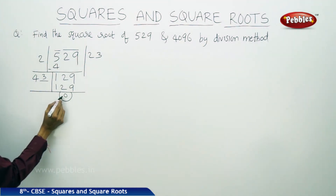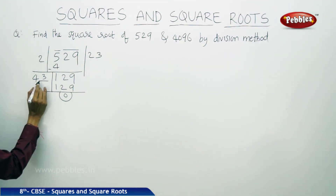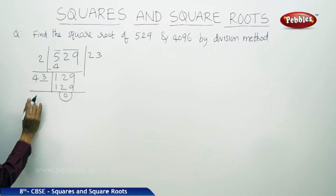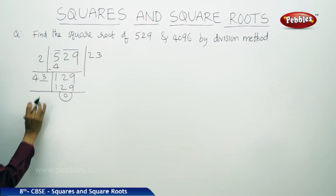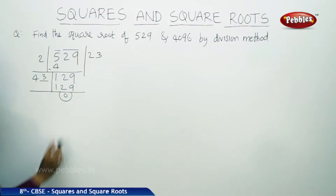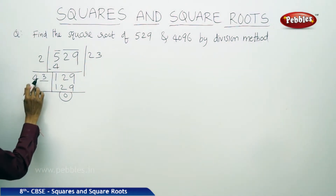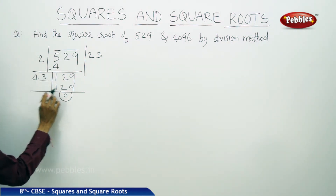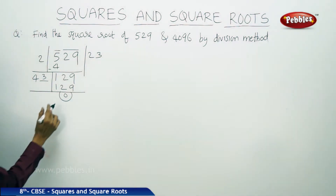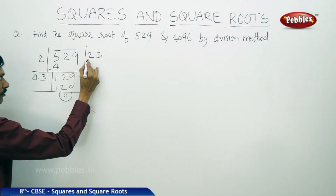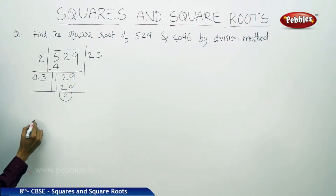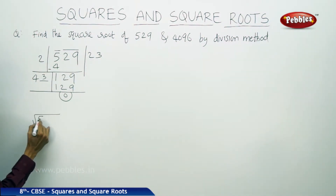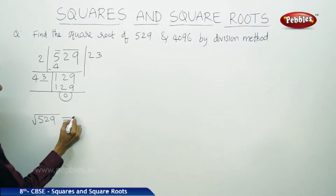We got the remainder 0. If you take any number other than 3 — if you take 4 — then 44 into 4 becomes more than 129, so we can't take 4. That is why we take 43, which is divided by 3. When you get the remainder 0, this quotient is the square root of the given number 529. So the square root of 529 equals 23.